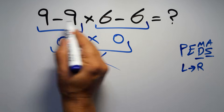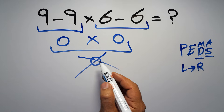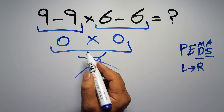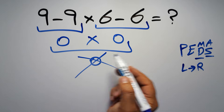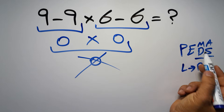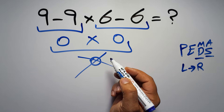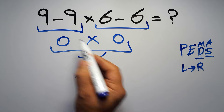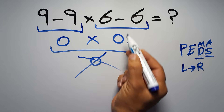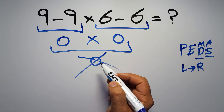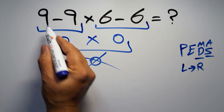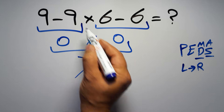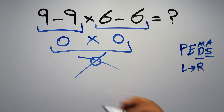In this expression we have two subtractions and one multiplication. According to PEMDAS, multiplication has higher priority than subtraction because multiplication comes before subtraction. So first we have to do the multiplication, then the first subtraction, and finally the second subtraction. If we do either subtraction before the multiplication, it is wrong.